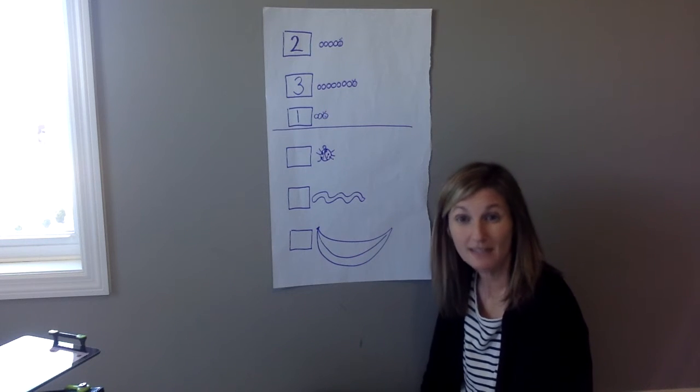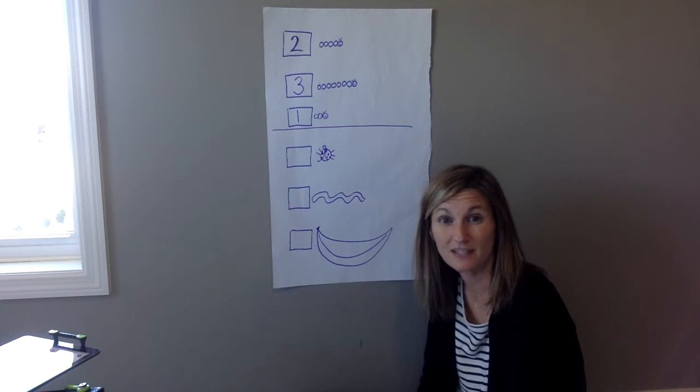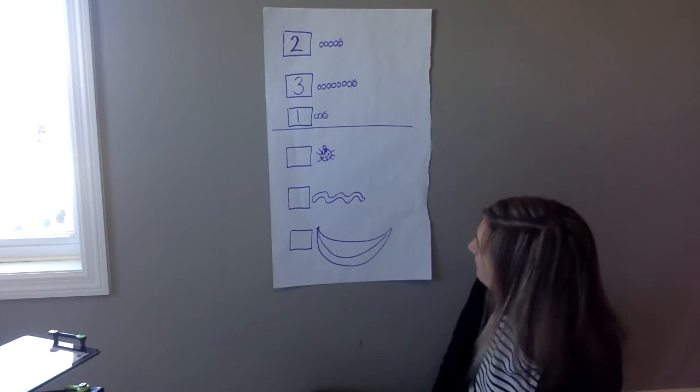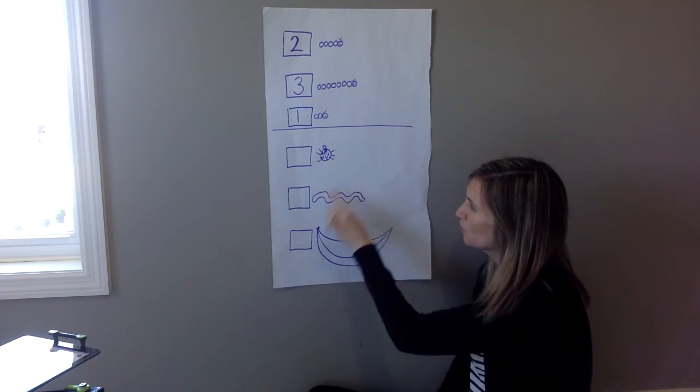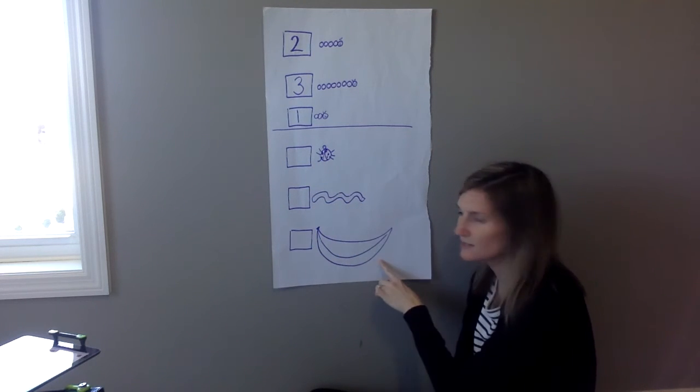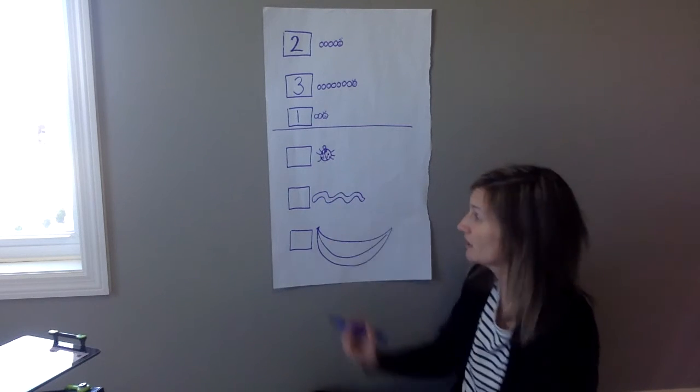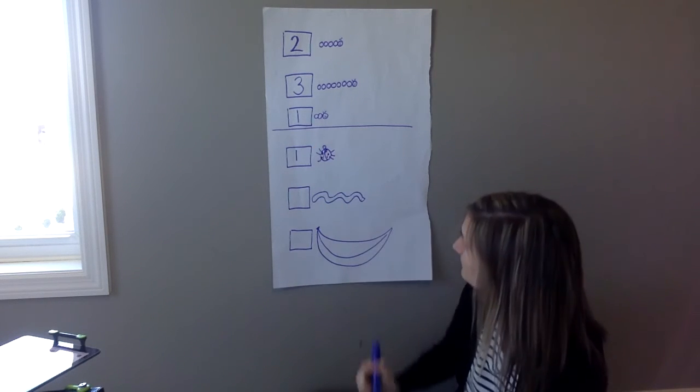So look and see which one is the shortest. When you look at them, remember, length goes this way. Which one is the shortest? It is the ladybug. So the ladybug is going to get the one.